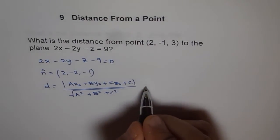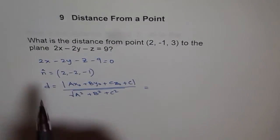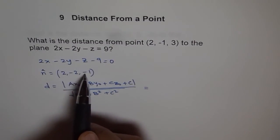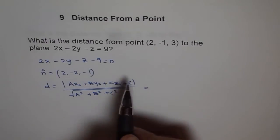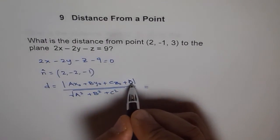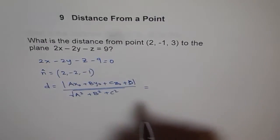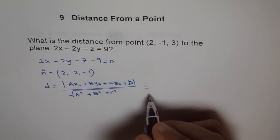We'll apply the distance formula here. We have the values A, B, C are 2, -2, and -1, and D is -9. We'll put these values here and then calculate.